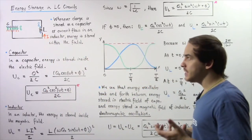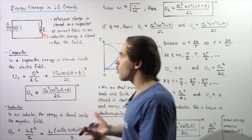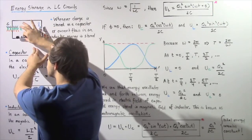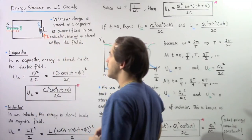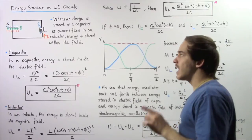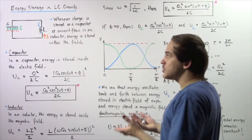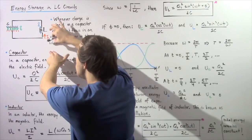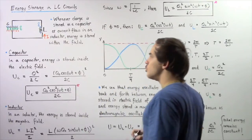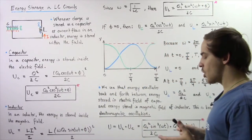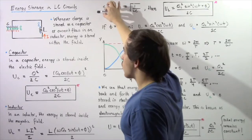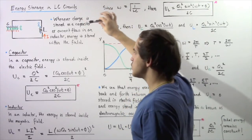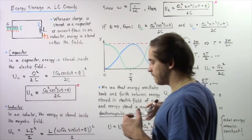Inside the capacitor, energy is stored within the electric field produced as a result of our separation of electric charge between the two plates. Likewise, inside our inductor, energy is stored inside the magnetic field produced as a result of the flow of an alternating electric current through the loops of our inductor. Whenever charge is stored on a capacitor or current flows in an inductor, energy is stored within those respective fields.